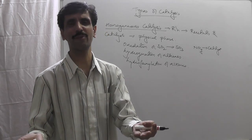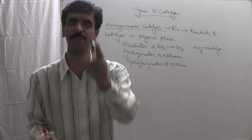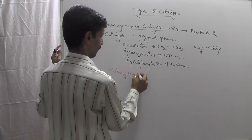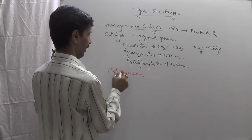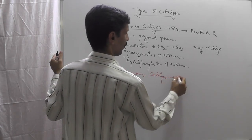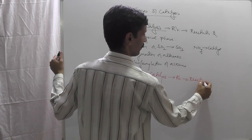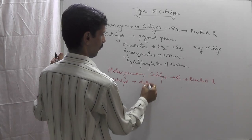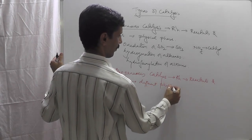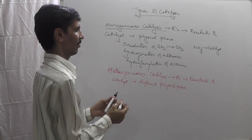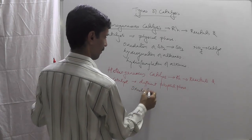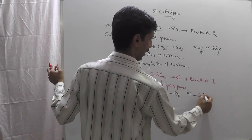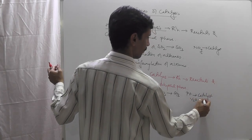Once homogeneous catalysis is clear, heterogeneous catalysis is very easy to understand. 'Hetero' means different, so in heterogeneous catalysis, the reactants and the catalyst are in different physical phases. For example, the oxidation of SO2 to SO3 in the presence of a platinum catalyst, or using V2O5 in the contact process — both are examples of heterogeneous catalysis.